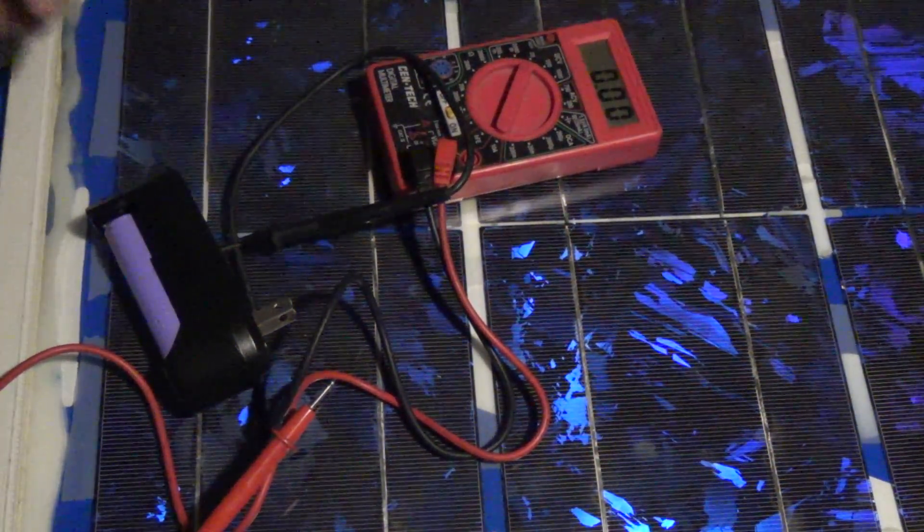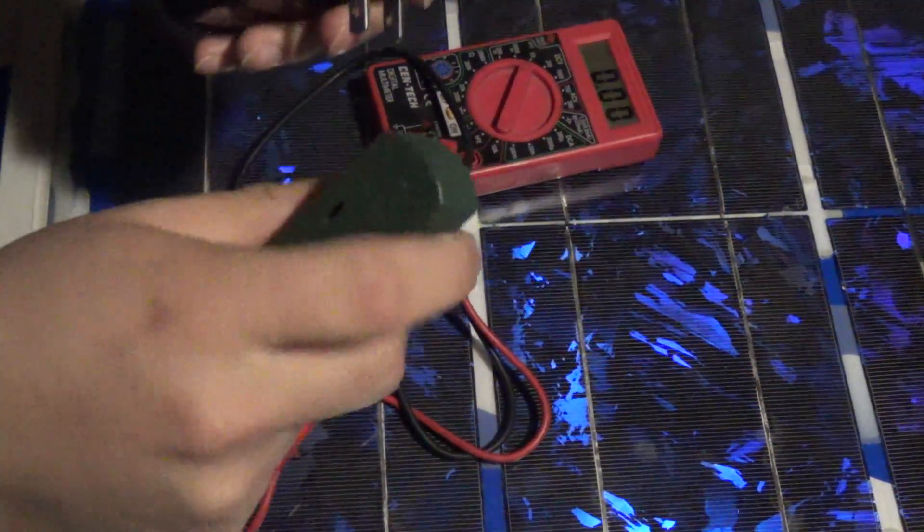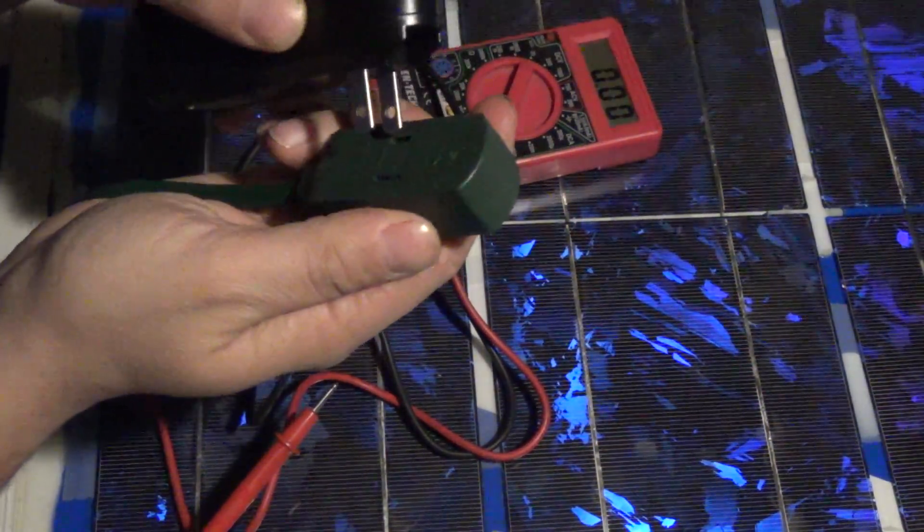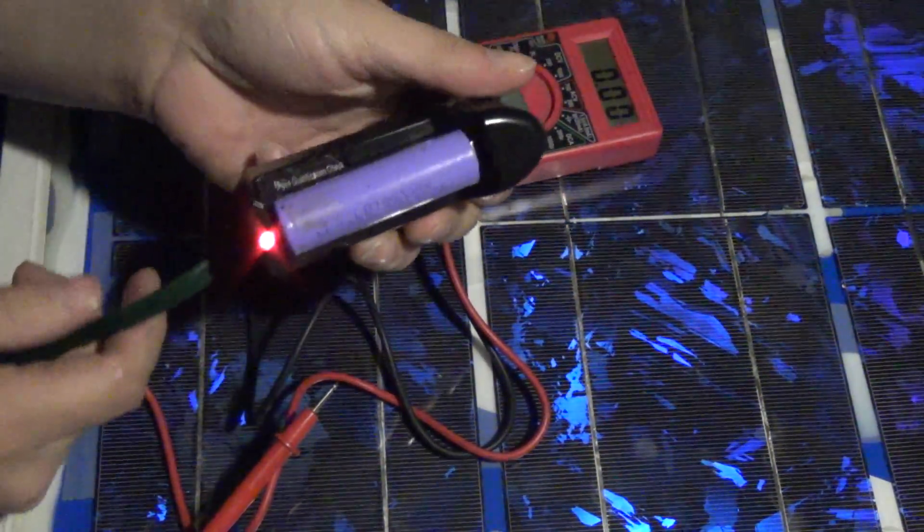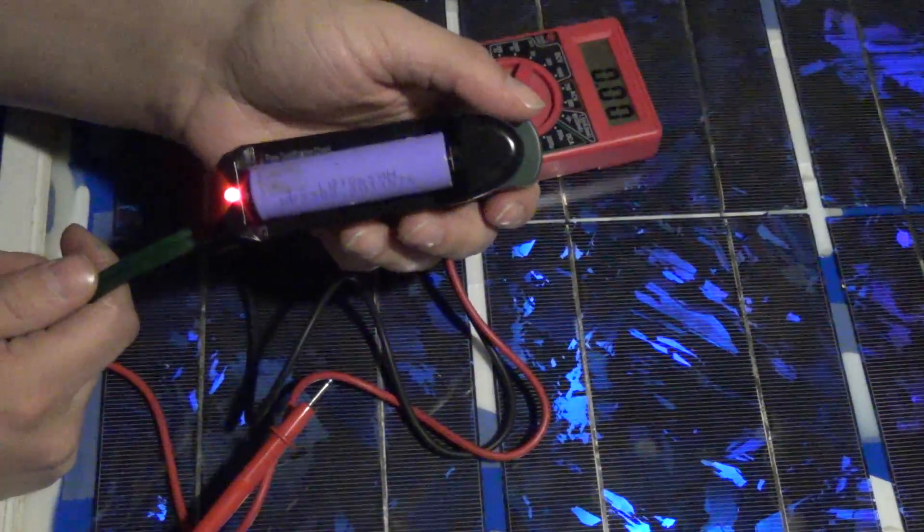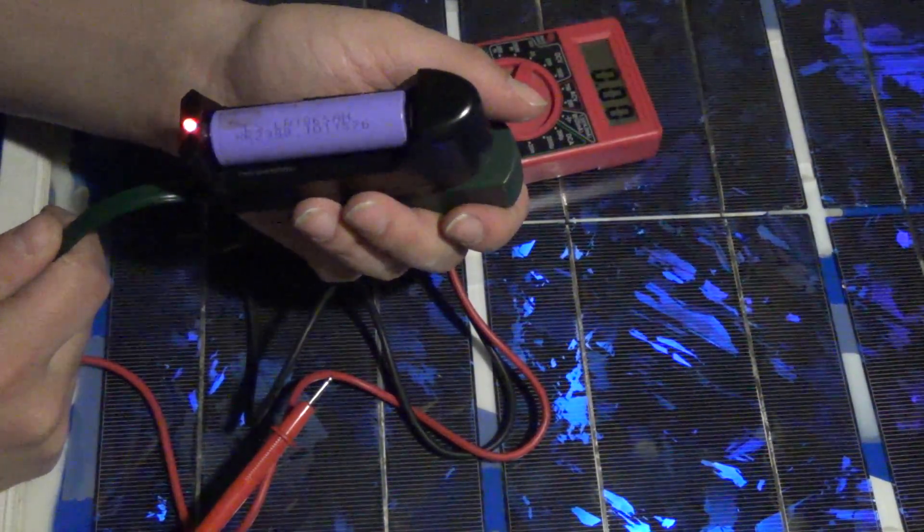And then when you plug it in—now I haven't fully charged any cells on this yet—but when you plug it in, red light comes on, and it's supposed to go green when the cell is done charging.